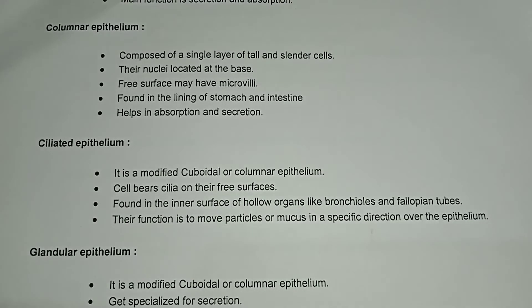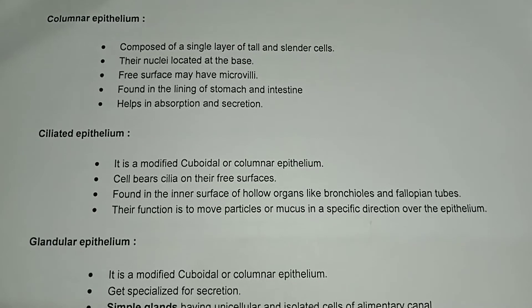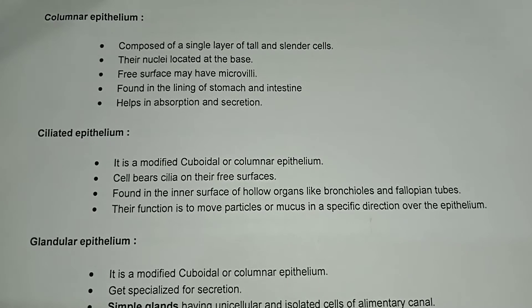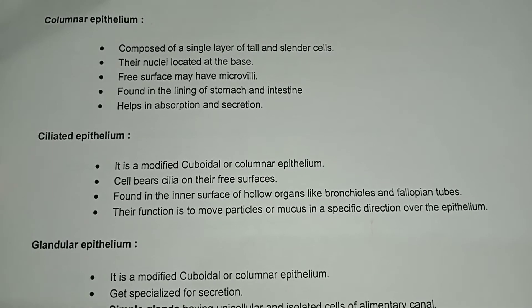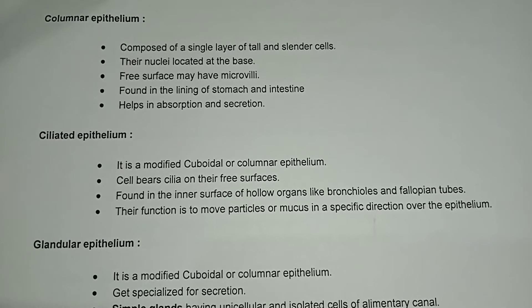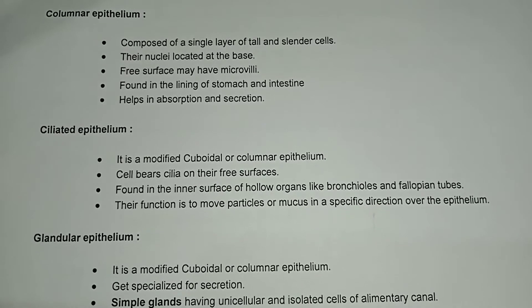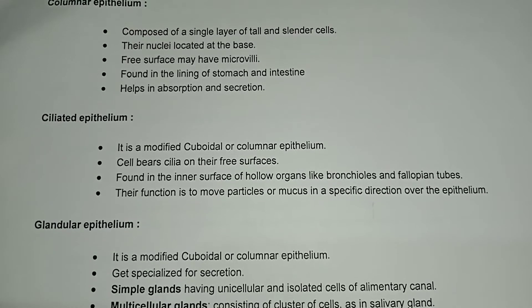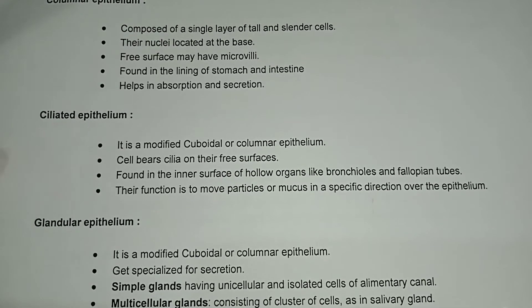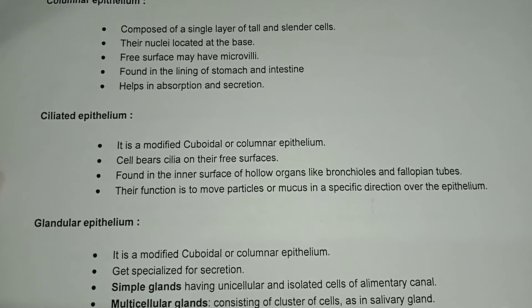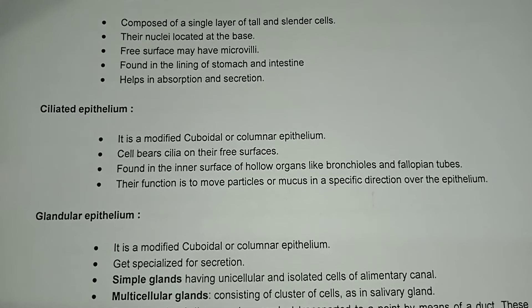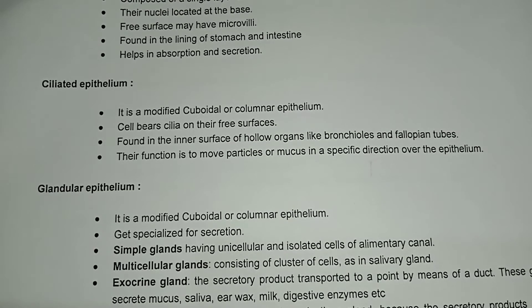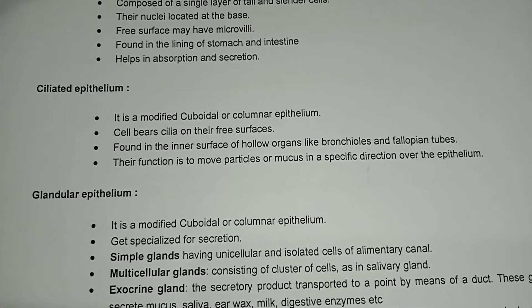Columnar epithelium is composed of a single layer of tall and slender cells. Their nuclei are located at the base. The free surface may have microvilli. It is found in the lining of the stomach and intestine and helps in absorption and secretion.